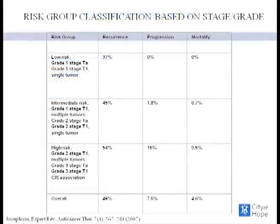Sylvester looked at a large follow-up of about 1,500 patients and risk-stratified patients based on grade and stage into three categories: low risk, intermediate risk, and high risk. In the low-risk category, the chances of mortality are essentially non-existent but recurrence rates are very high. In the high-risk category, about 50% of patients will recur, with about 15% risk of progression and 10% risk of mortality.